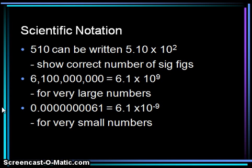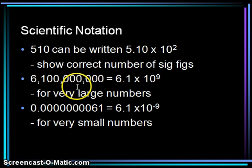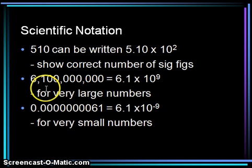The second reason is to express very large numbers. For example, 6,100,000,000 can be written as 6.1 times 10 to the 9. We can see that a large number has a positive exponent — we move the decimal 9 spots to get times 10 to the 9.